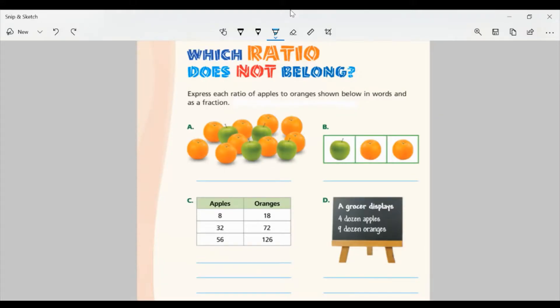Let's start off with page three. Which ratio does not belong? Express each ratio of apples to oranges shown below in words and as a fraction. Let's start with A. How many apples do we have? I have one, two, three, four apples. So I'm going to write that down. Four apples to, and we want to count how many oranges we have now. I have one, two, three, four, five, six, seven, eight, nine oranges. So I have four apples to nine oranges. If I wrote this as a fraction, it would be four over nine.